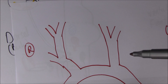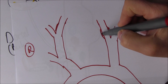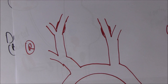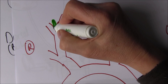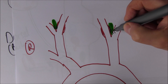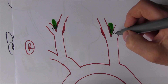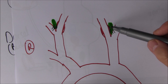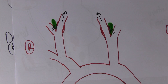The internal carotid goes straight into the brain, and there's a swelling called the carotid sinus where pressure receptors are located. But what we're interested in here are the carotid bodies - areas of tissue located right at the bifurcation of the carotid arteries. They receive blood supply directly from the carotid arteries in that area.